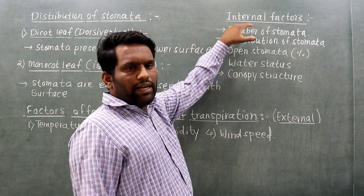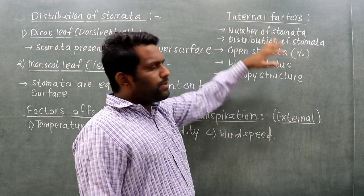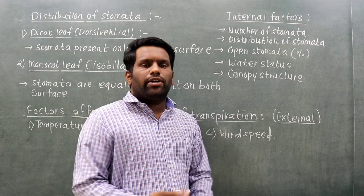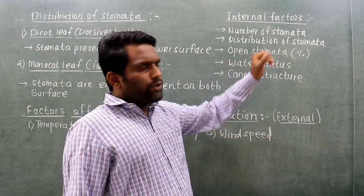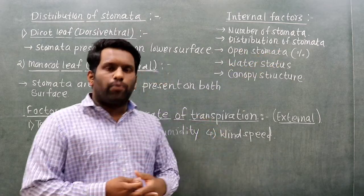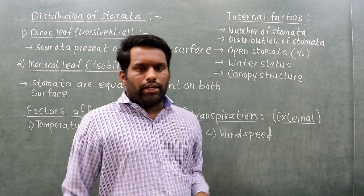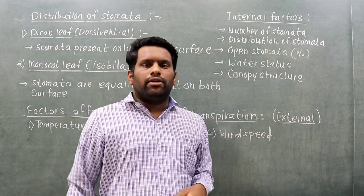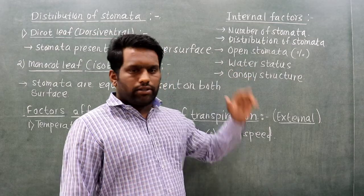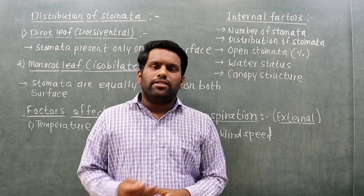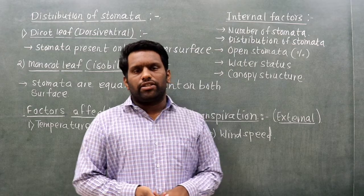For internal factors: the distribution of stomata on the leaf surface is one important internal factor affecting the rate of transpiration. The number and arrangement of stomata determine how much water vapor can be lost.